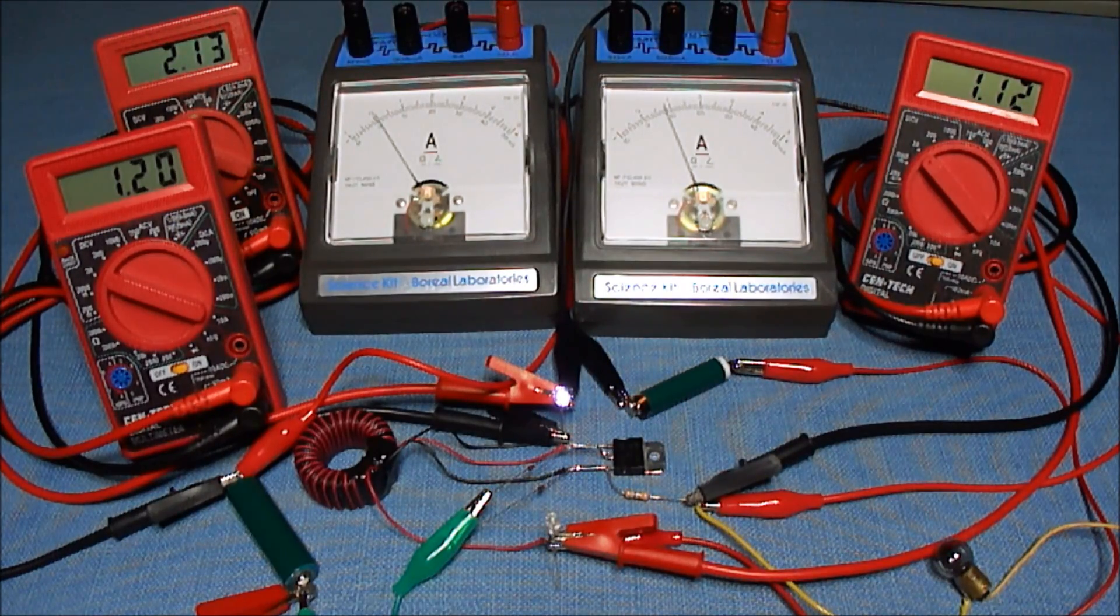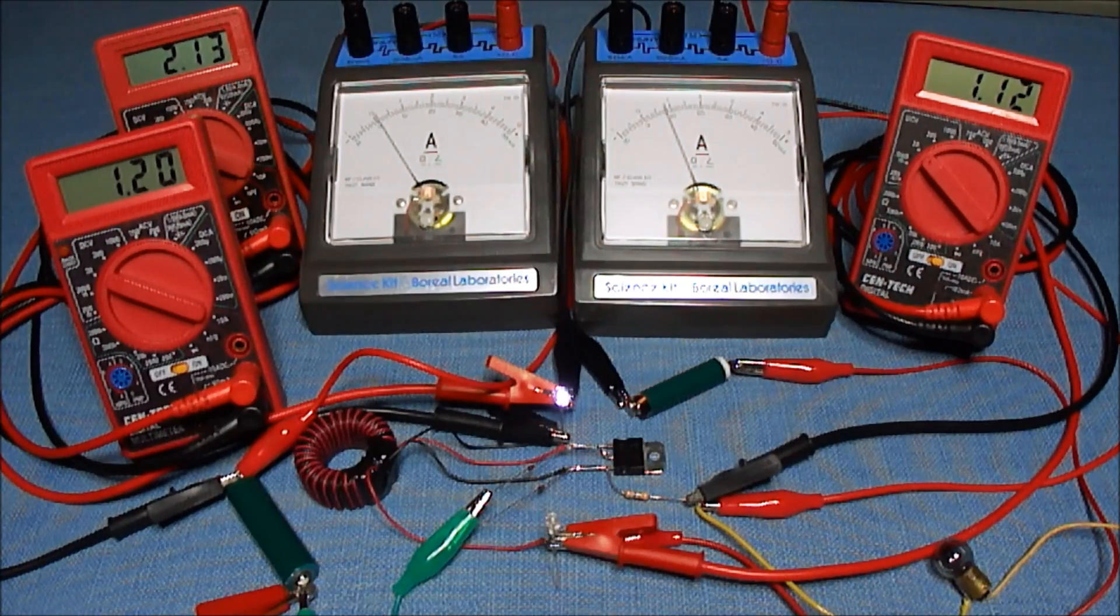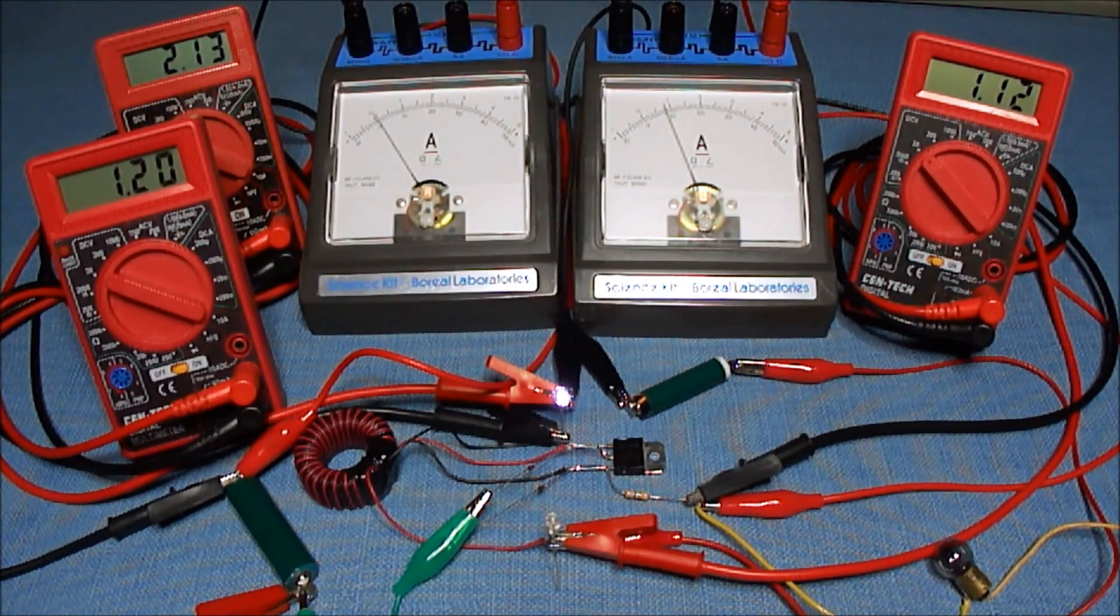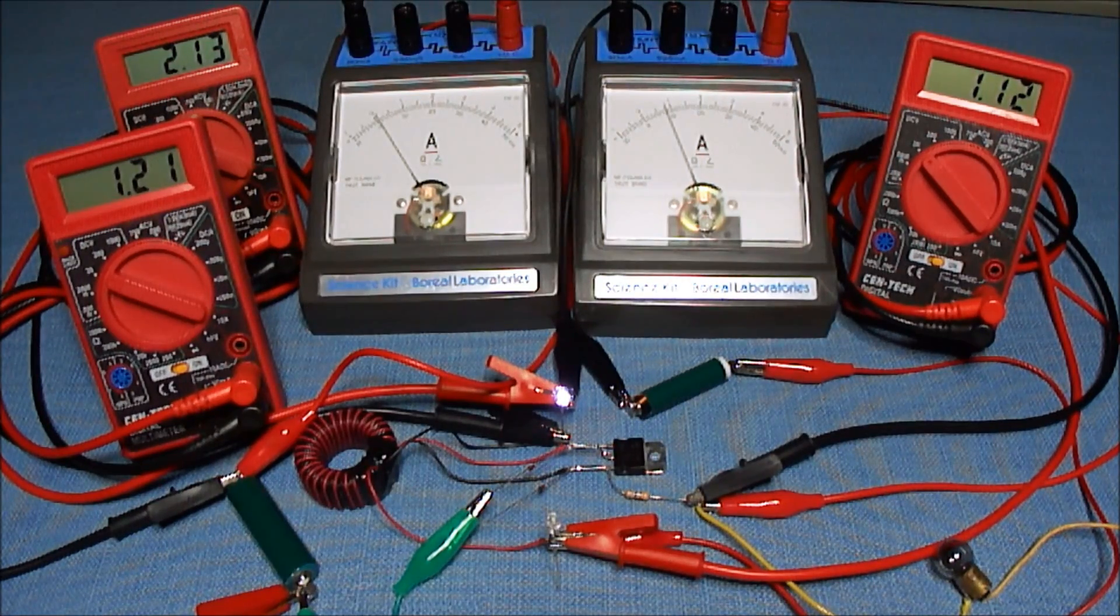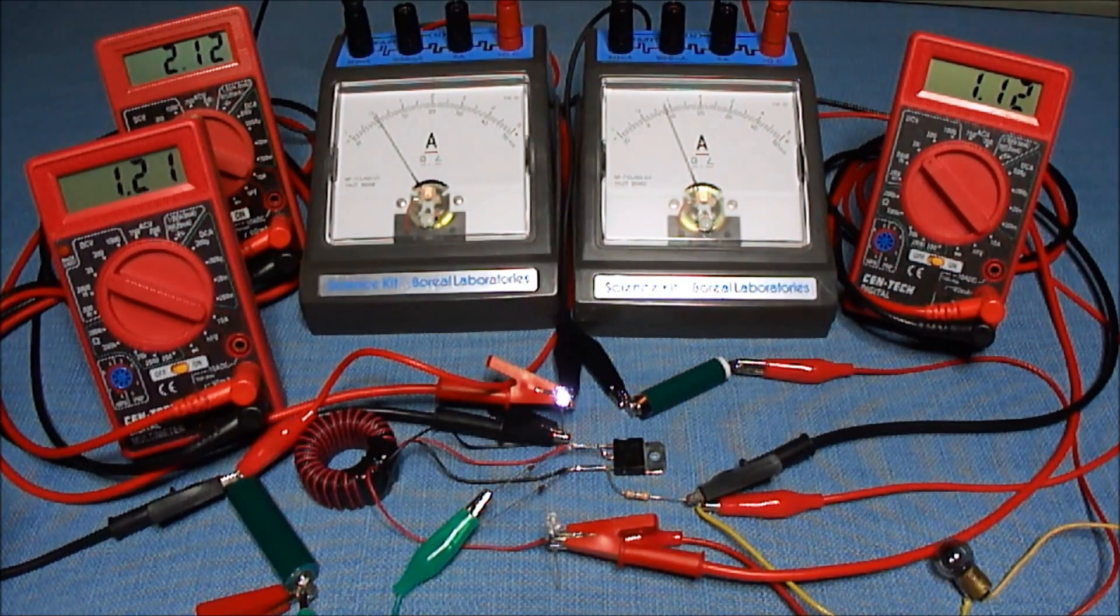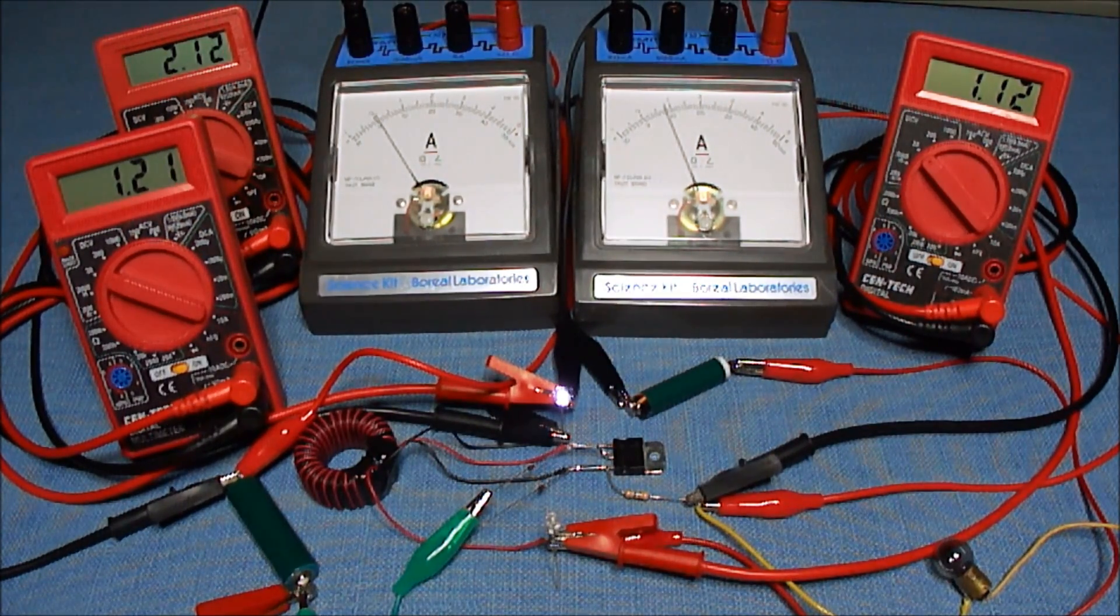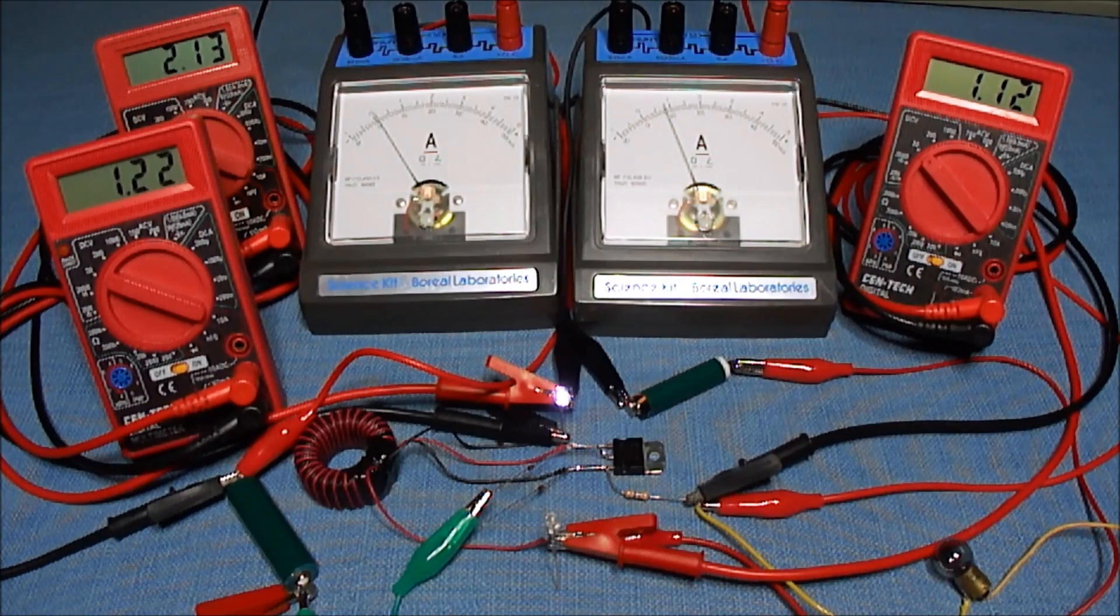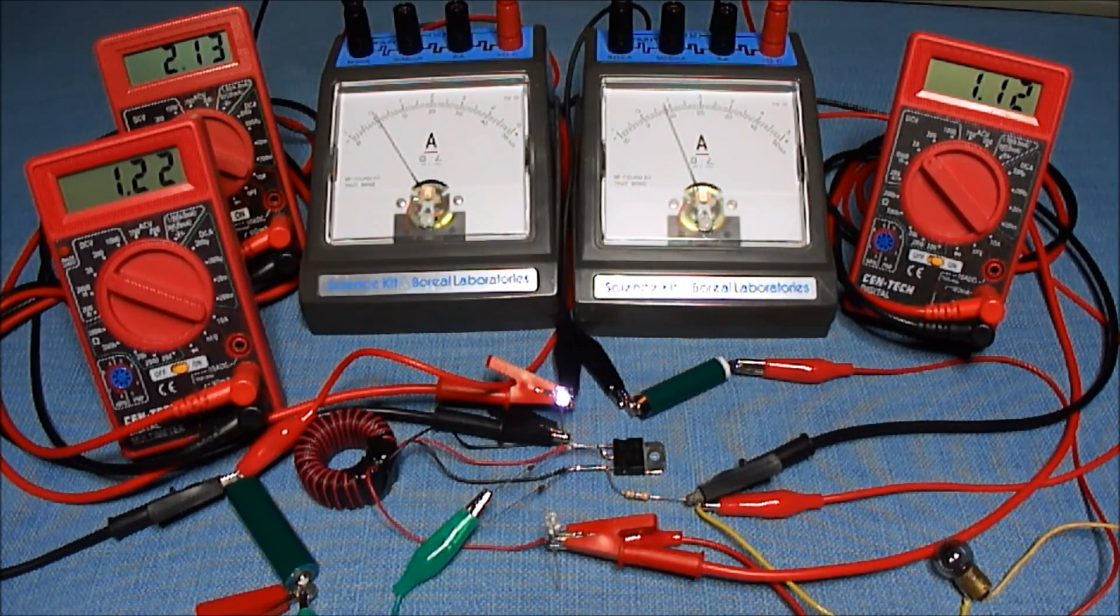This version 3, the base to collector, uses the least amount of power in of all these versions. And you'll notice the LED has 2.12 volts going across it. The current is still 1 milliamp. The battery is charging up.